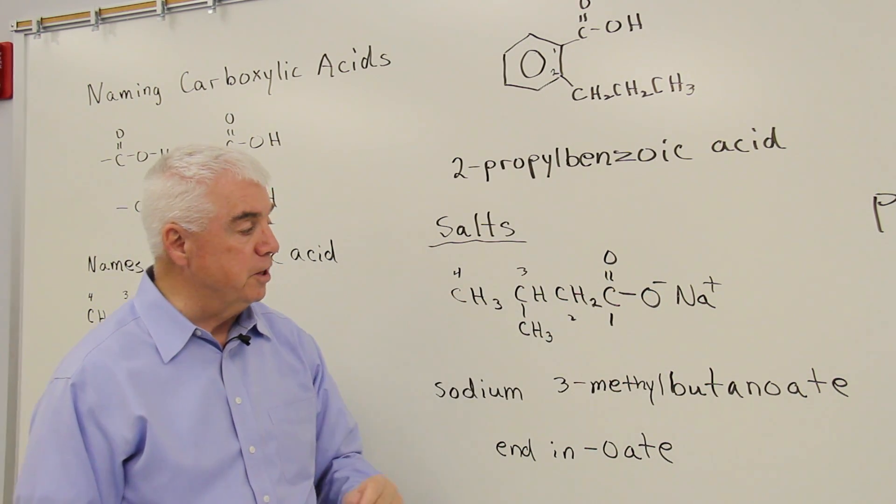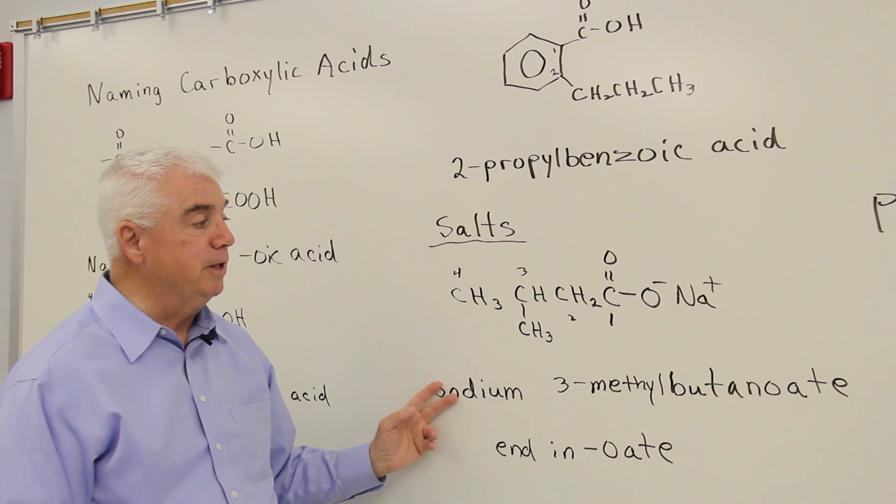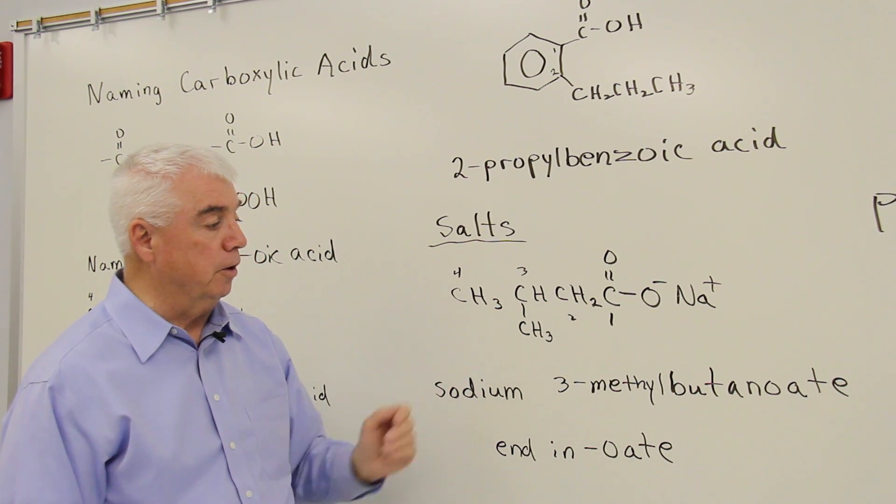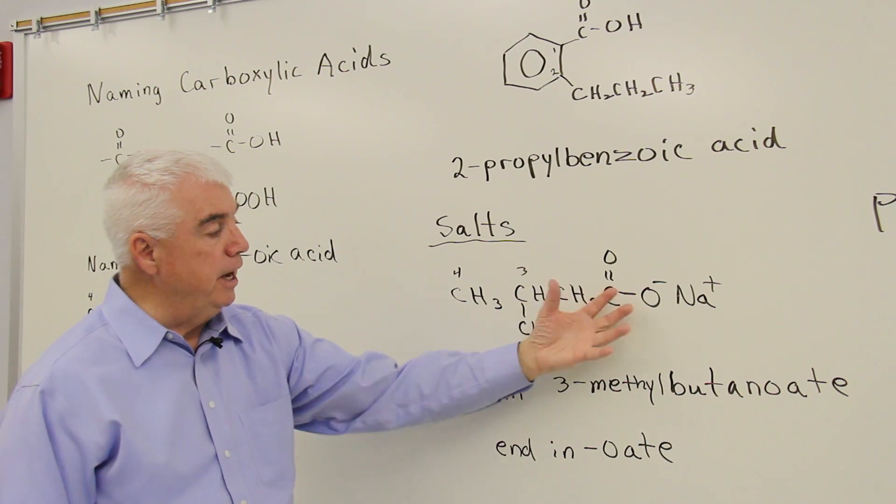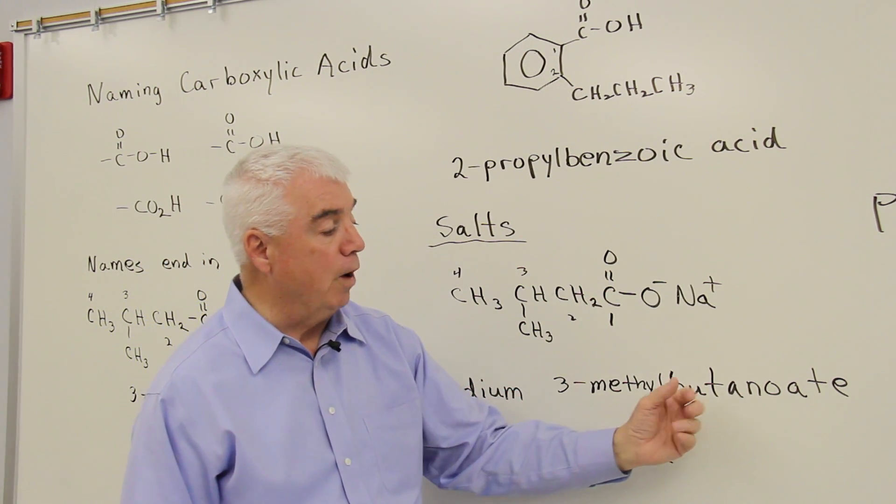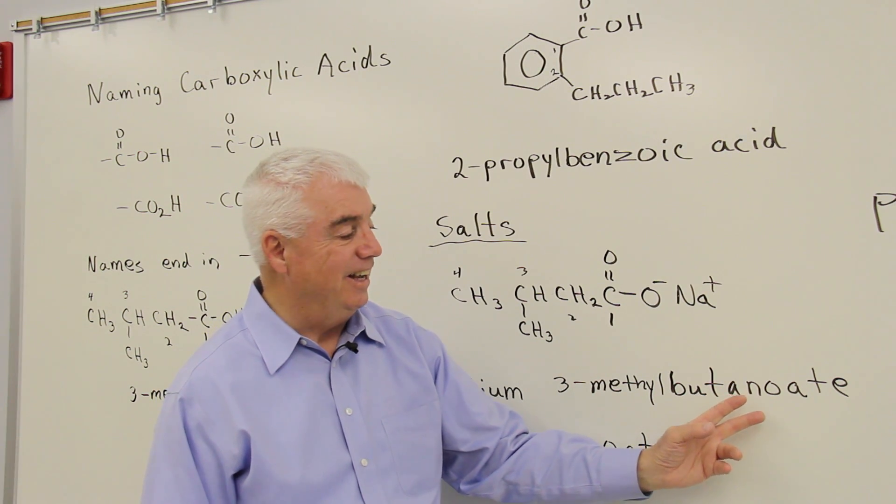The first word is the name of the metal, sodium in this case. Then the second word is all the rest of the structure. And it's going to be the name of the carboxylic acid, but we change the ending. Rather than oic acid, it's O-A-T-E, oate.